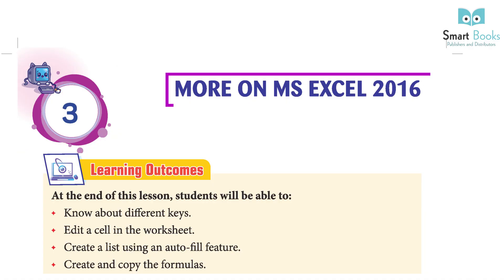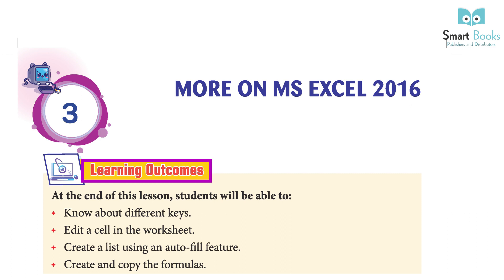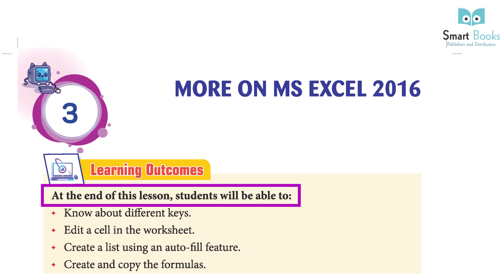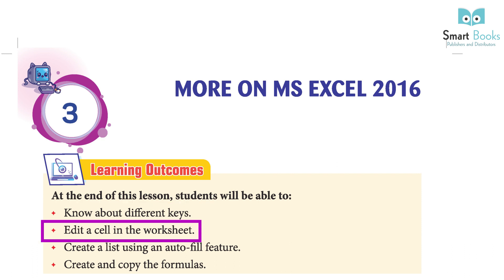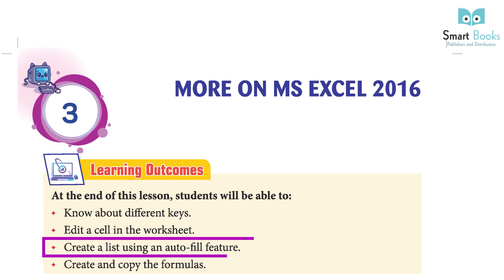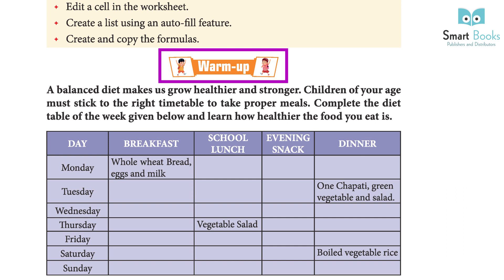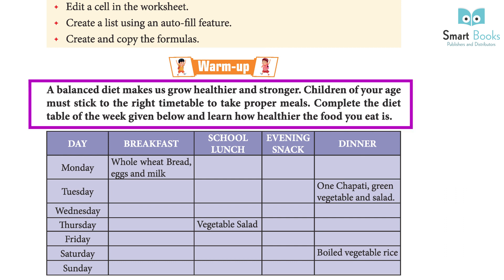Chapter 3: More on MS Excel 2016. Learning outcomes: at the end of this lesson, students will be able to know about different keys, edit a cell in the worksheet, create a list using an autofill feature, and create and copy formulas. Warm up: a balanced diet makes us grow healthier and stronger. Children of your age must stick to the right timetable to take proper meals. Complete the diet table of the week given below and learn how healthy the food you eat is.